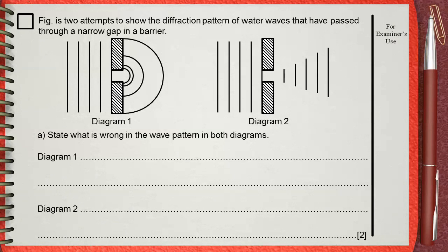Figure is two attempts to show the diffraction pattern of water waves that have passed through a narrow gap in a barrier. State what is wrong in the wave pattern in both diagrams.